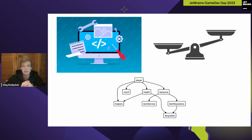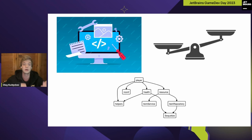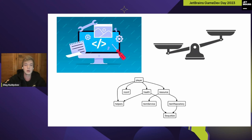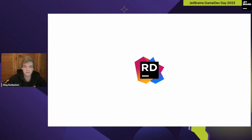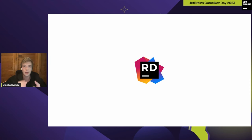Dependencies can mean a lot — starting with software dependencies and ending with how events in a game depend on each other, and what can happen to a game if those dependencies are broken. Now, let's turn to our subject — Rider — and take a look at what's hiding inside it.